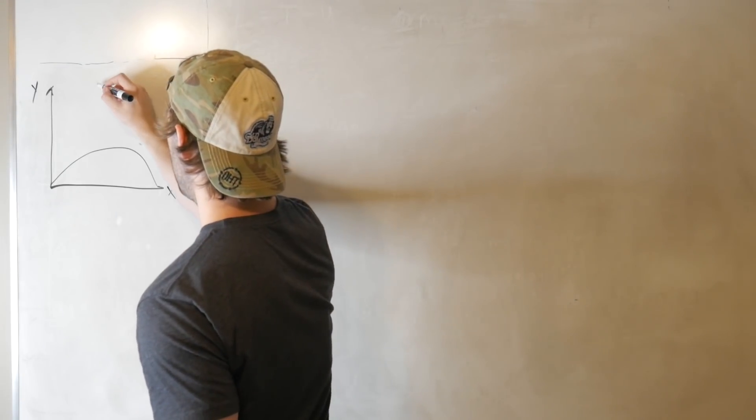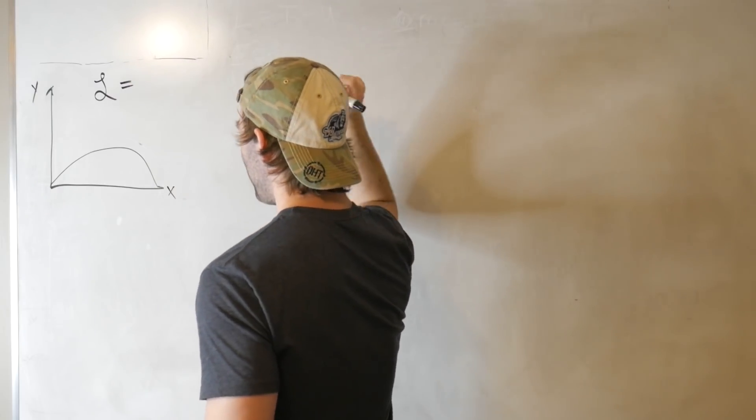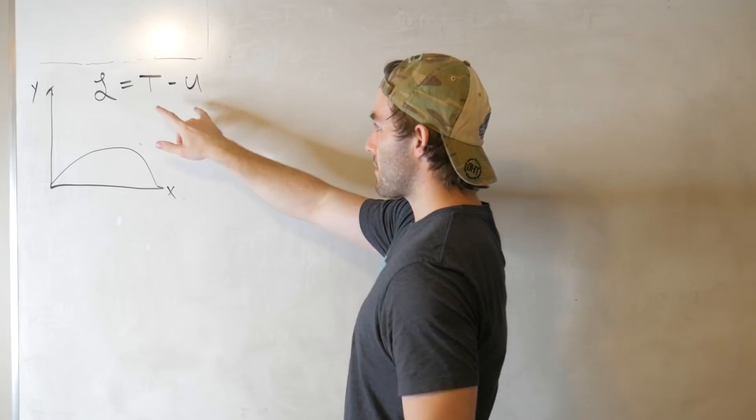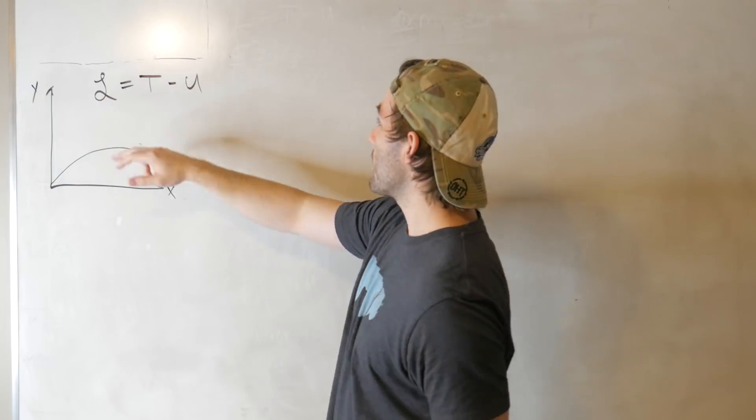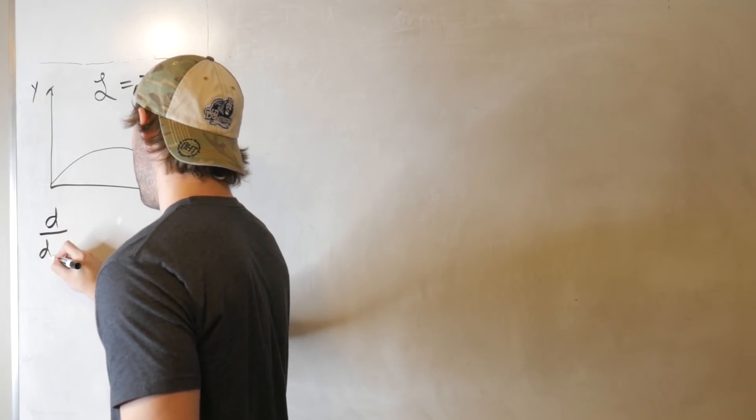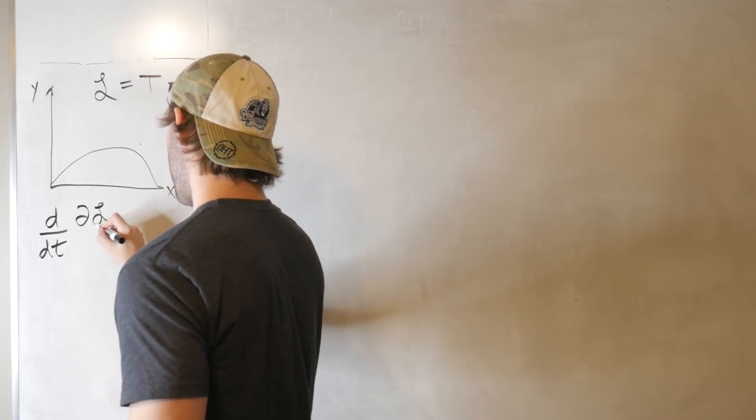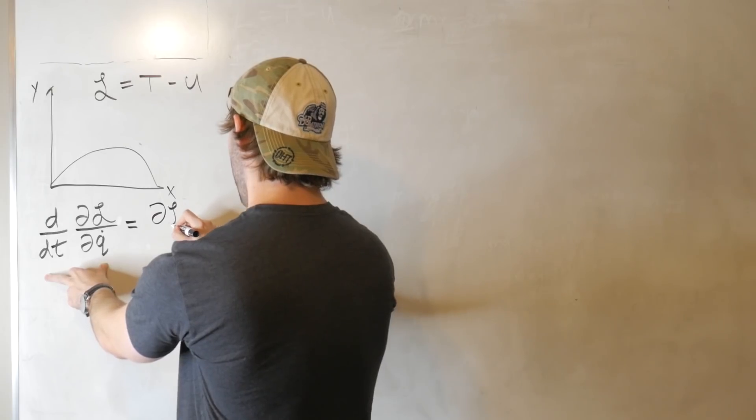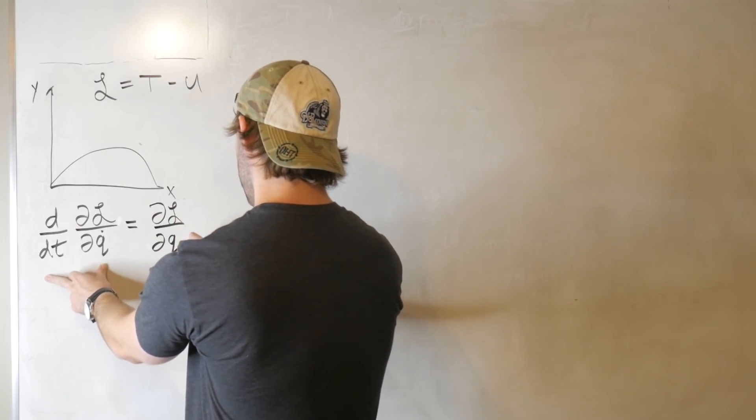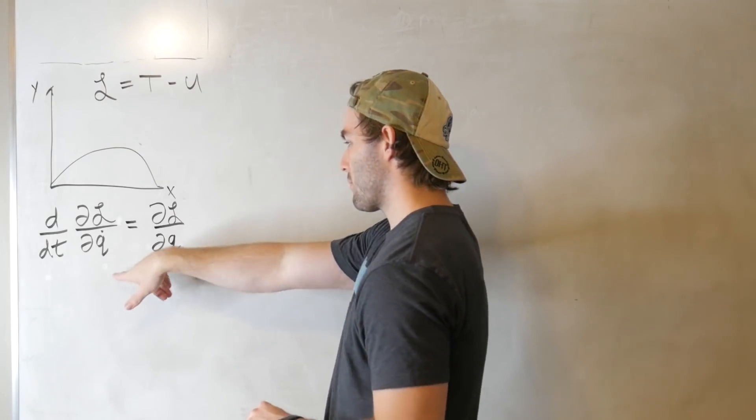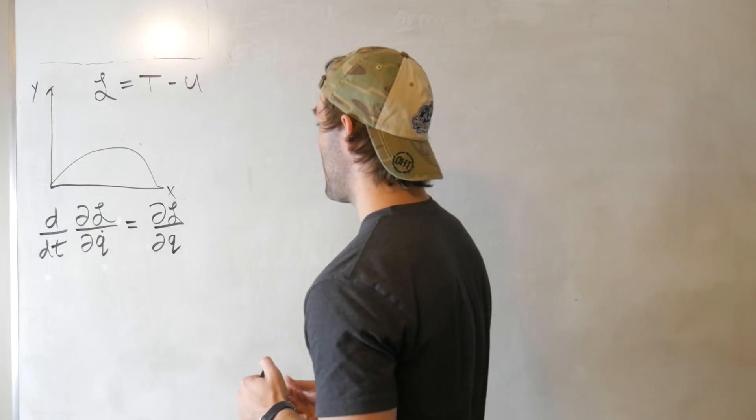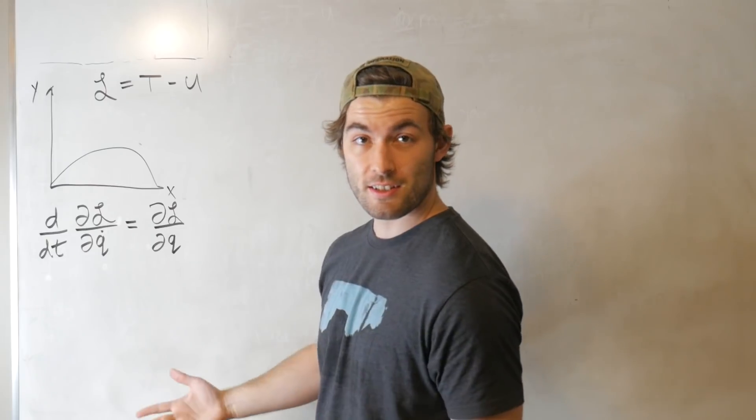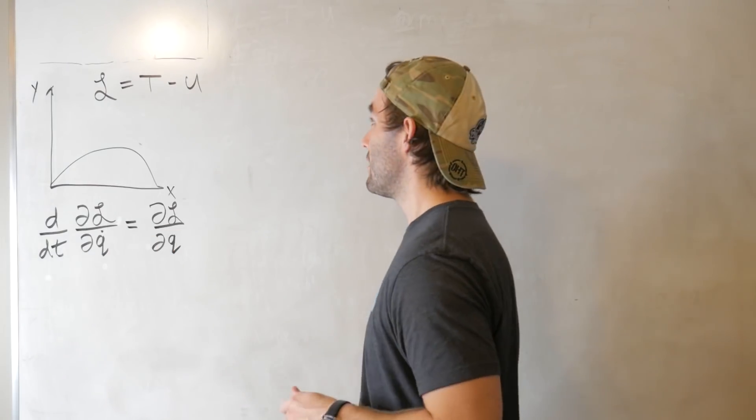So the definition of the Lagrangian, which I write with a curly L, not to be confused with like a Laplace transform or something, is, like I just said, the kinetic term minus the potential term. And the Euler-Lagrange equations are in terms of certain types of derivatives of this quantity. We're ignoring air resistance, so the kinetic energy is still just going to be one-half mv squared, and the potential energy is going to be mgh.